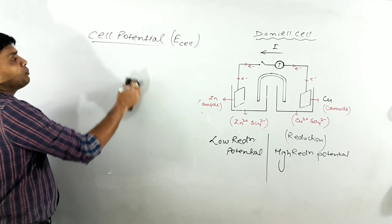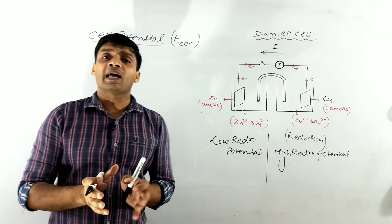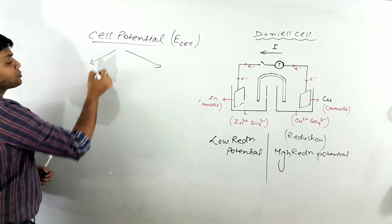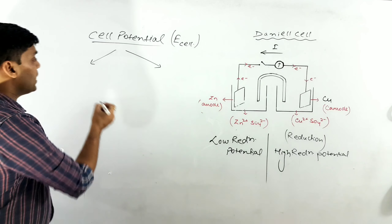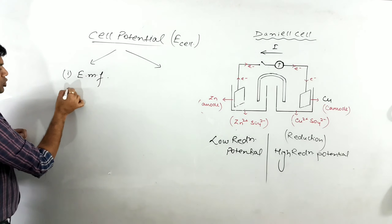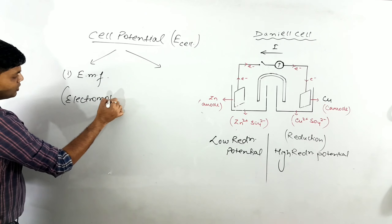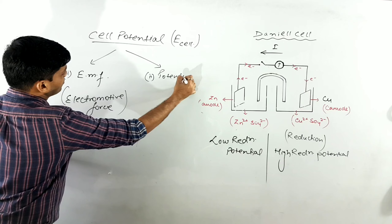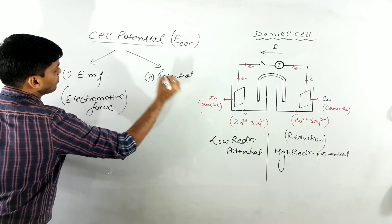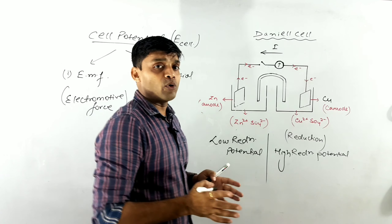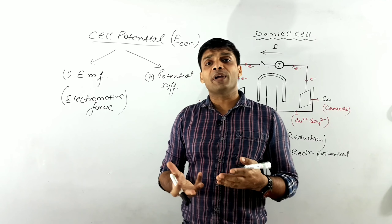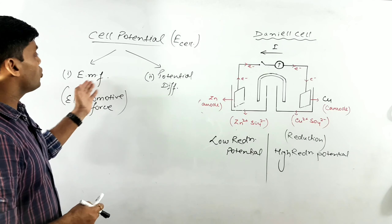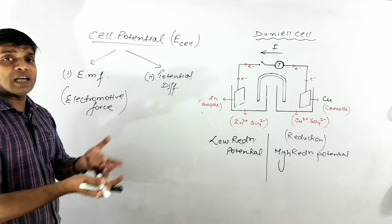I hope both terms — electrode potential and cell potential — are clear. Now let's understand some very important concepts. Cell potential is further classified into two types: the first is EMF, whose full form is electromotive force, and the second is potential difference. Rather than just memorizing bookish definitions, let's understand the actual concepts in a transparent and crystal clear manner.